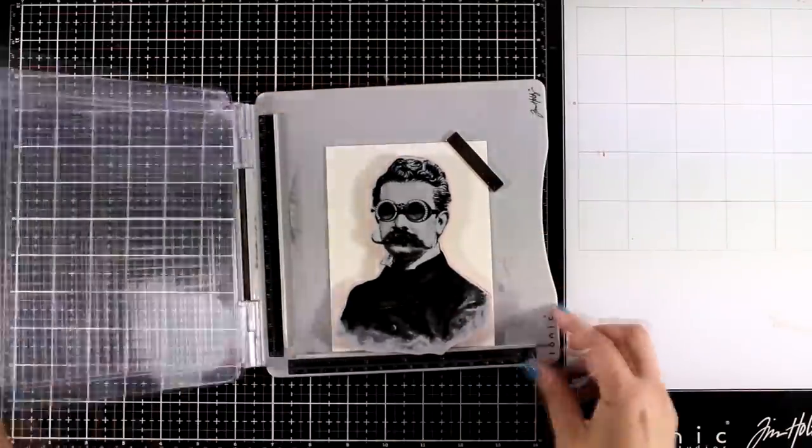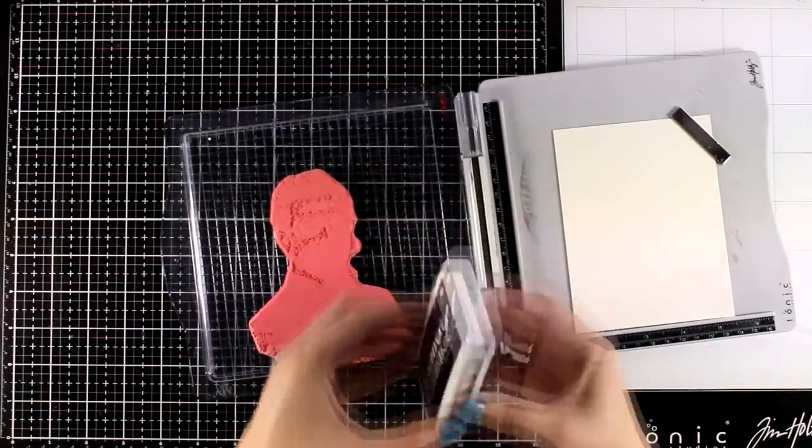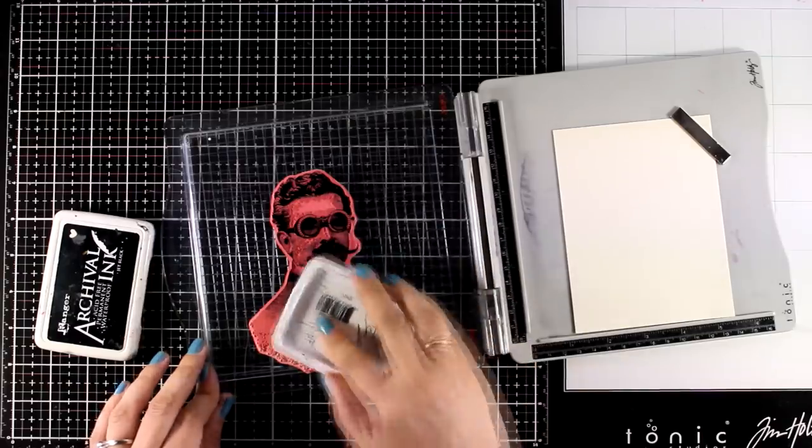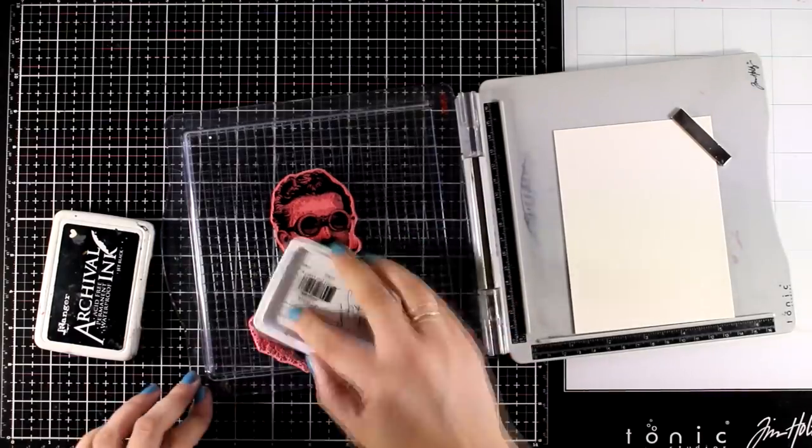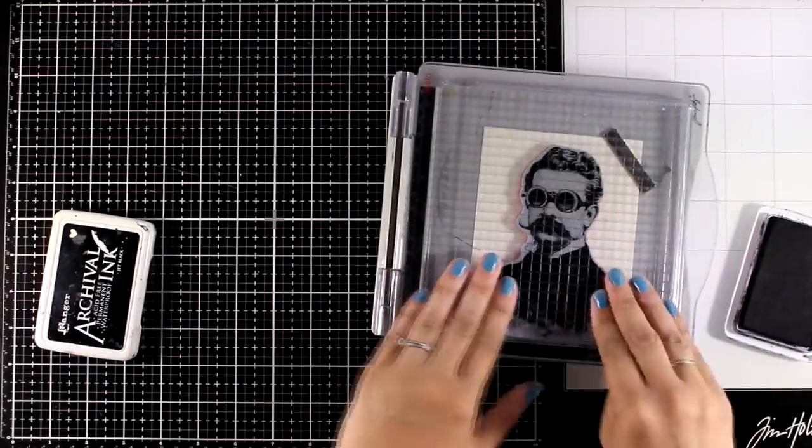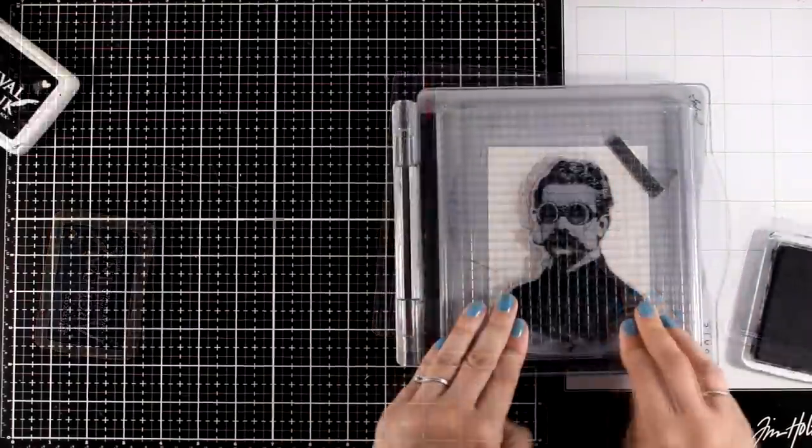Now my focal point is going to be the professor. So I'm going to stamp him. I'm using my stamping platform. This is quite a big stamp and I need to get a good impression. So I'm stamping that with black archival ink, that's jet black. And I'm working on mixed media paper.